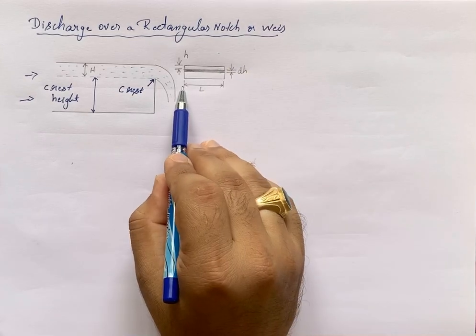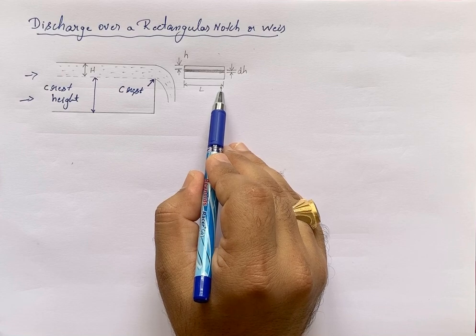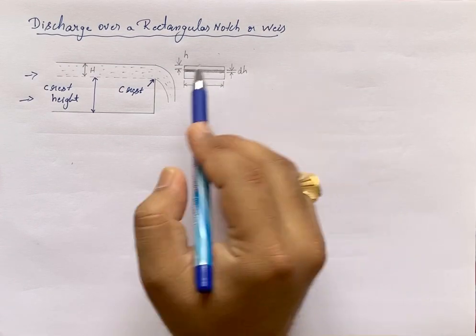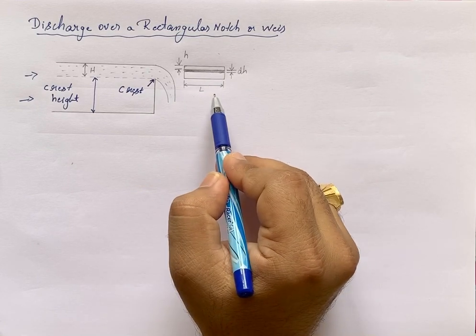This height is H and L is the length of the notch or weir. Now consider an element of a horizontal strip of thickness dH and length L.